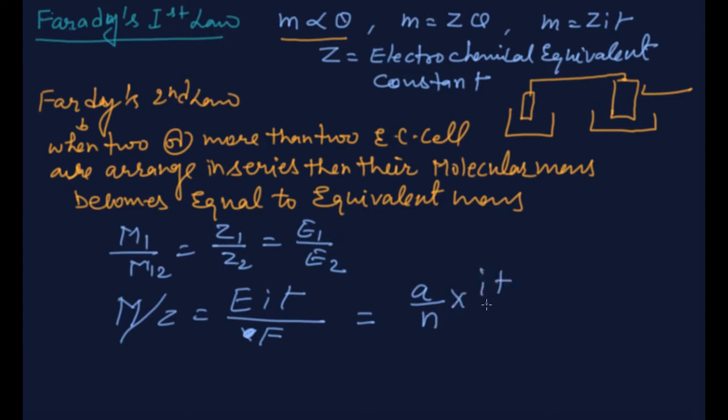i t is equal to q, q is equal to i t divided by 96500. So if somebody asks you mass deposit, you use this formula: a by n i t divided by 96500. It will help you a lot.